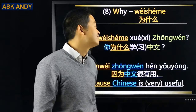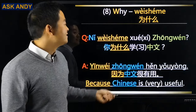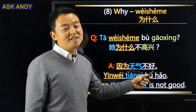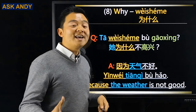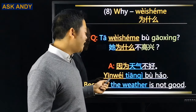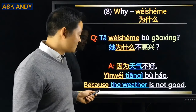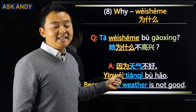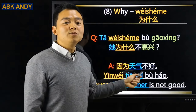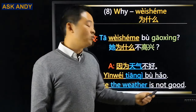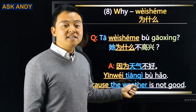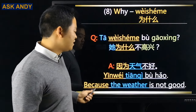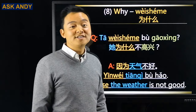To know more about 很 (very) in Chinese, check that video. 她为什么不高兴? Answer with 因为: 因为天气不好 (Because the weather is not good).